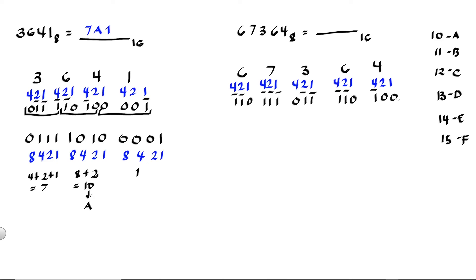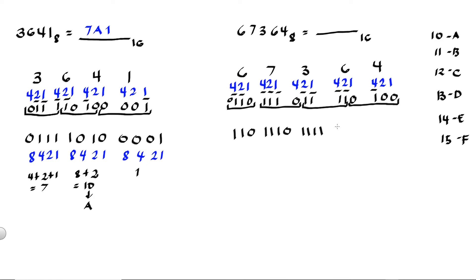After that, we group the binary numbers into groups of 4 since we are looking for hex. So we have our first group of 4, then a second group of 4, another group of 4, and our last group. We can add a leading 0 here, or leave it as is. Then we write the numbers: 1, 1, 0, 1, 1, 1, 0, 1, 1, 1, 1, 0, 1, 0, 0.